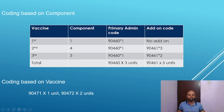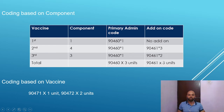For the first vaccine with one component, I'm billing 90460 for 1 unit — there is no add-on code. The second vaccine consists of four components, so I'm billing 90460 for 1 unit and the remaining three units with 90461. The third vaccine consists of three components, so I'm billing 90460 for 1 unit and the remaining two units with 90461. This is based on the component.